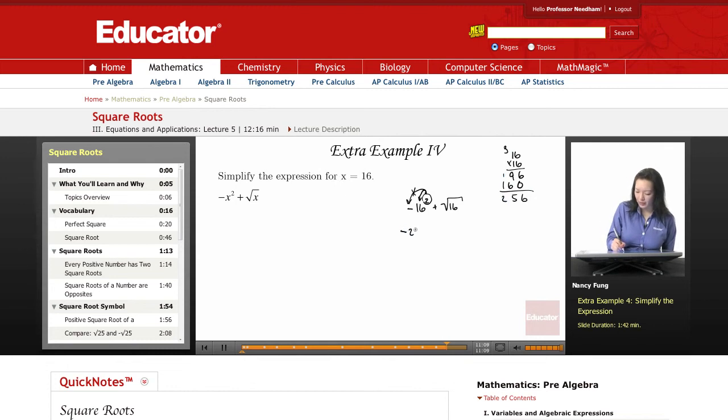So with the negative out front, negative 256 plus the square root of 16. The square root of 16 is 4, so negative 256 plus 4.